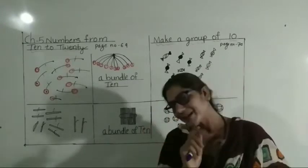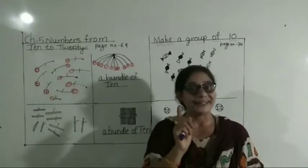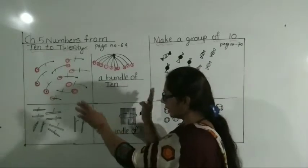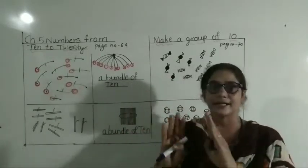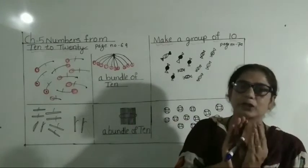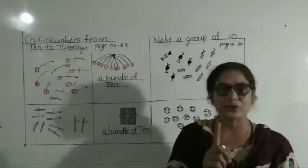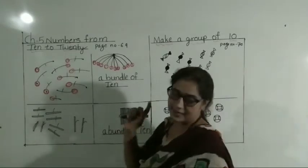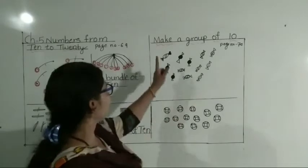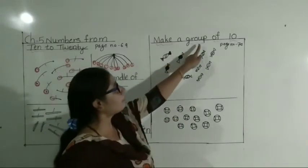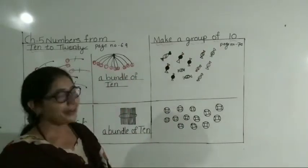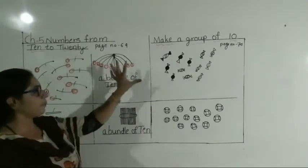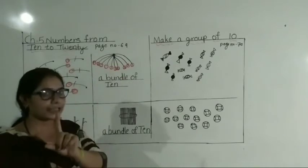One ten. How many students? Ten. Ten objects — one bundle. Understood, students. Now make a group of ten. Make a group of ten. Ithar aap dekha — ek ek group ho gaya. Ek group mein ten hota hai.